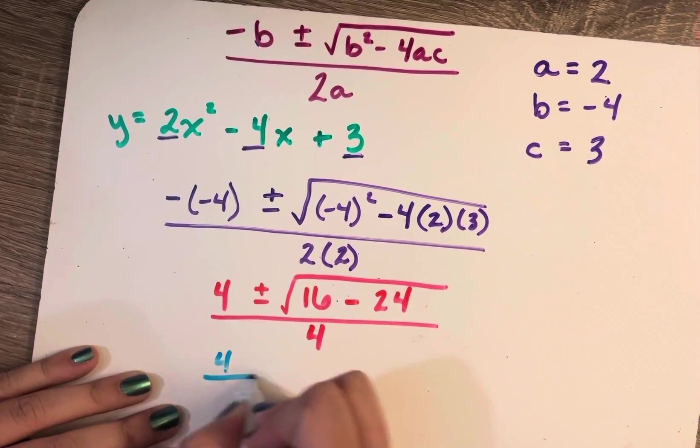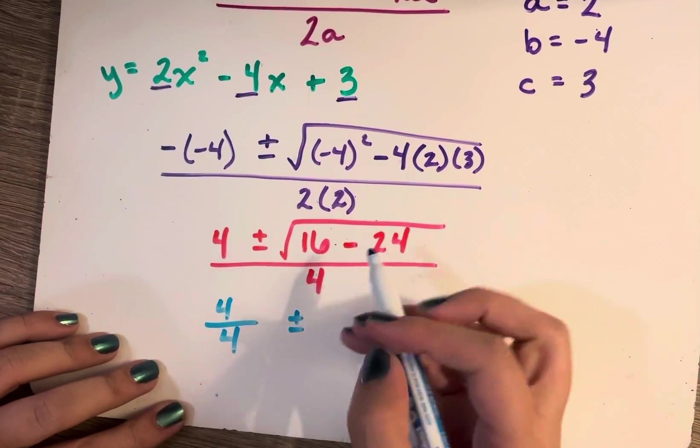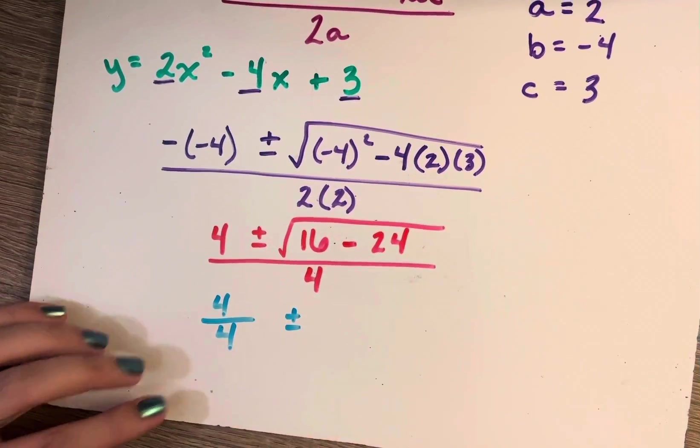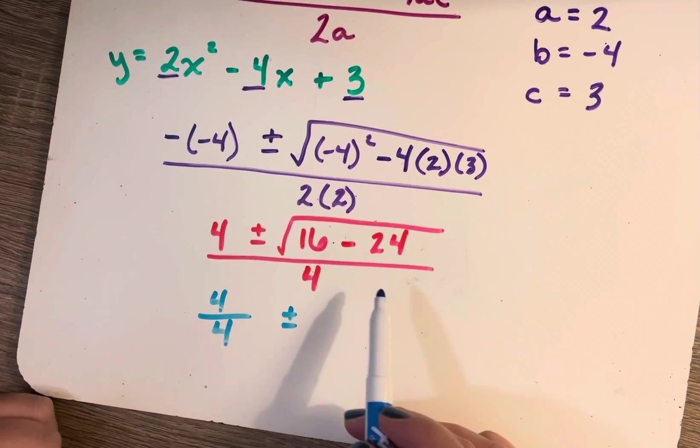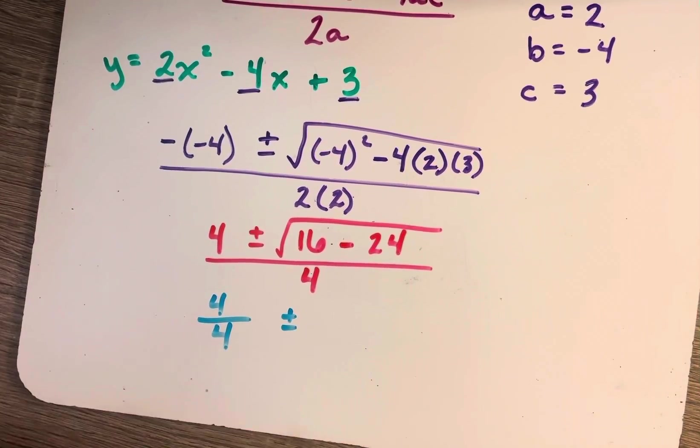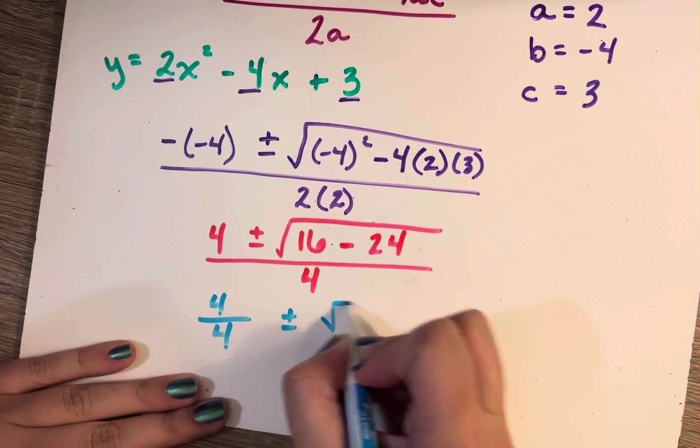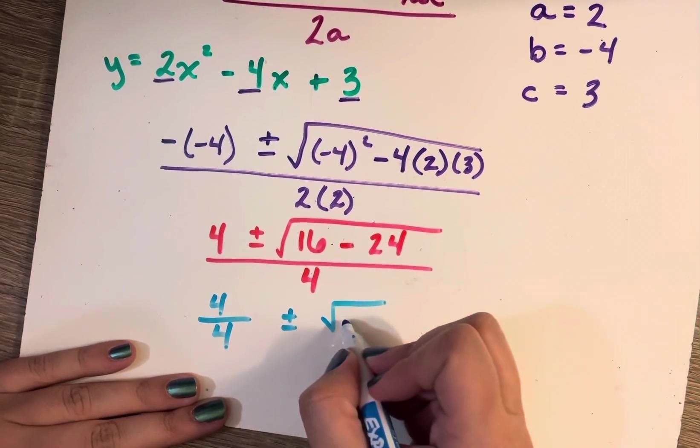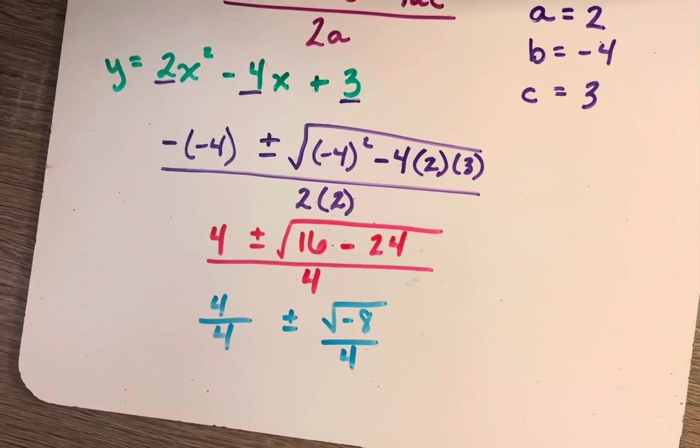So this would be 4 over 4, plus or minus. Now 16 minus 24, that's going to give me a negative number, which tells me that my solutions here are non-real solutions or complex solutions. So I will have some i involved somewhere in my final answer here. So the square root of 16 minus 24 is negative 8. And that is over 4.